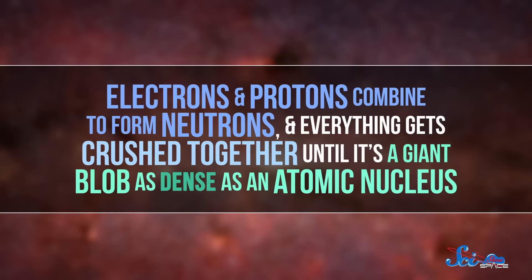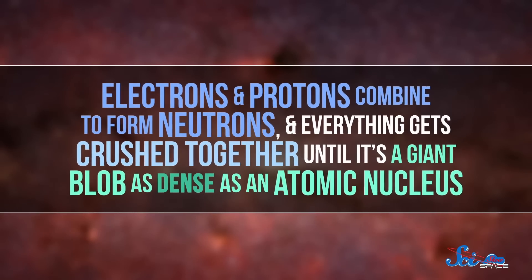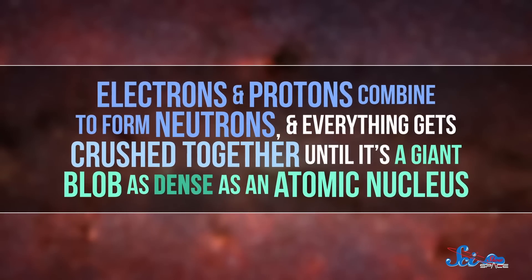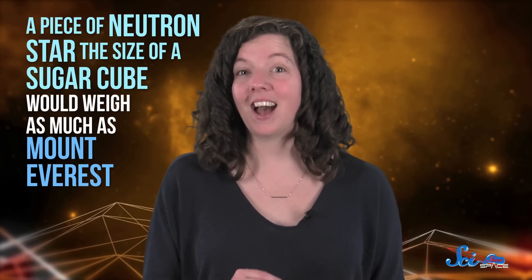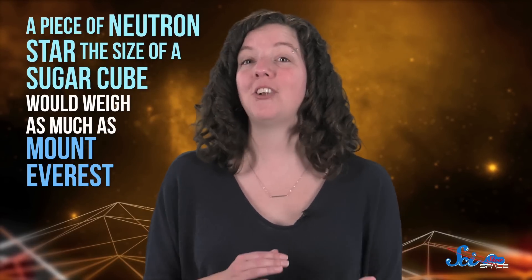Electrons and protons combine to form neutrons, and everything gets crushed together until it's a giant blob as dense as an atomic nucleus. A piece of neutron star, the size of a sugar cube, would weigh as much as Mount Everest. That's how dense they are.